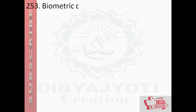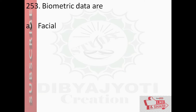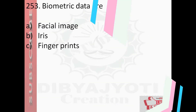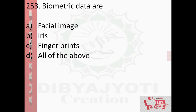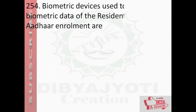Question number 153: Biometric data are — option A: facial image, option B: iris, option C: fingerprint, option D: all of the above. And the answer is option D: all of the above.